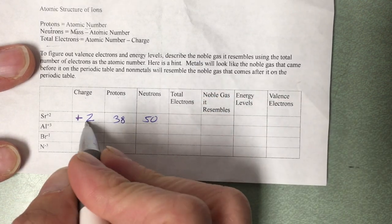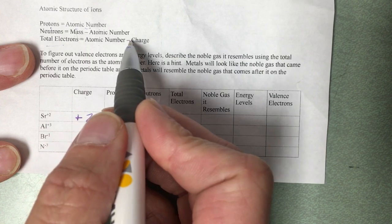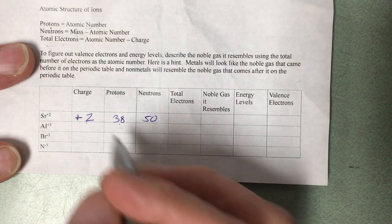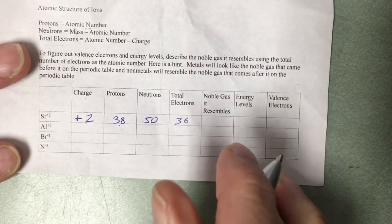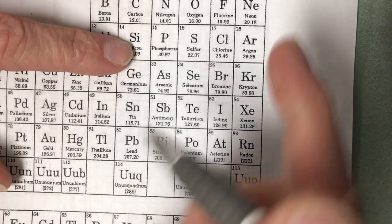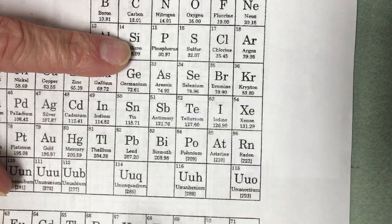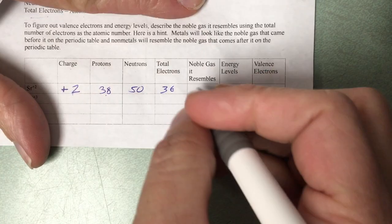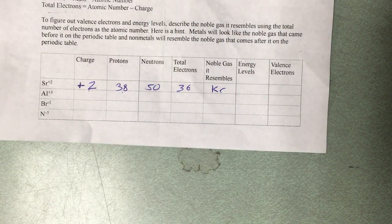Again, for total electrons, we can use this charge. Total electrons is the atomic number minus the charge. Atomic number is 38, minus a positive 2, gives us 36. And again, this has to equal one of our noble gases. 36 is krypton. So when this is done, it'll resemble the element krypton.